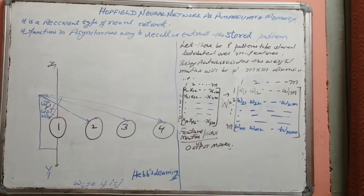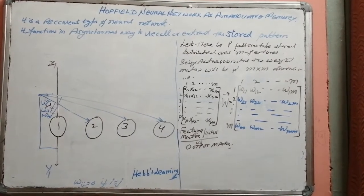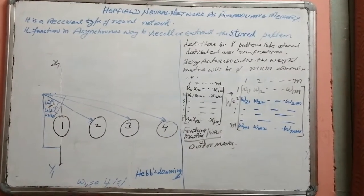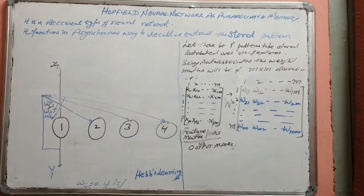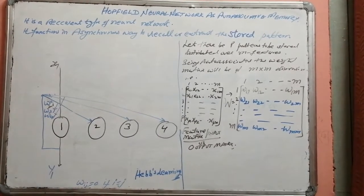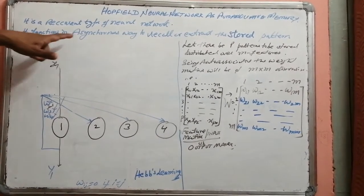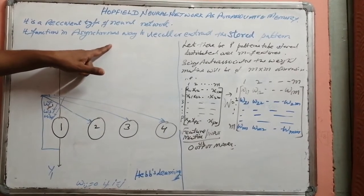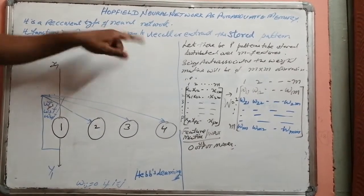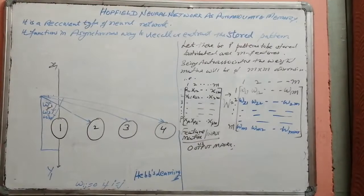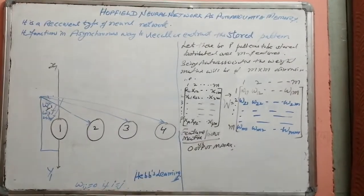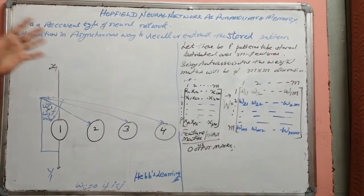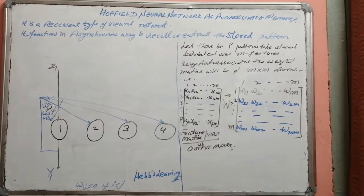So the learning or weight operation rule will remain the same as that of HAPS learning. The only difference is that it functions in an asynchronous way to recall or to extract back the stored patterns within the memories. This asynchronous method we are going to look at in the near future.